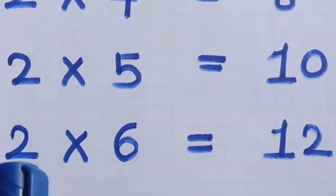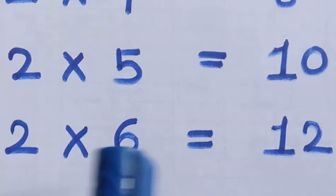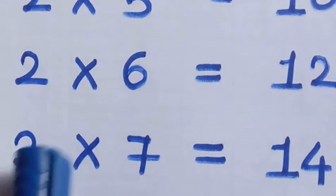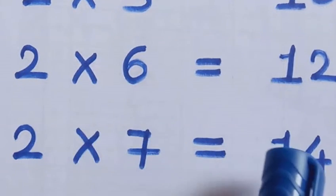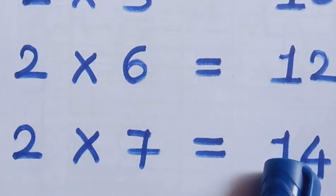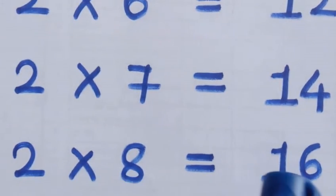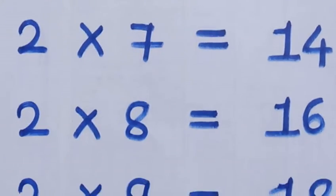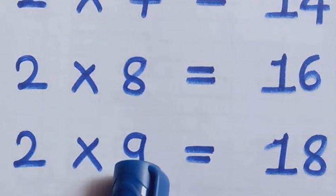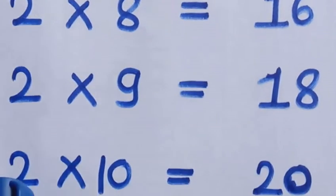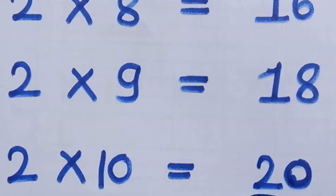Two sixes are twelve. Two sevens are fourteen. Two eights are sixteen. Two nines are eighteen. Two tens are twenty.